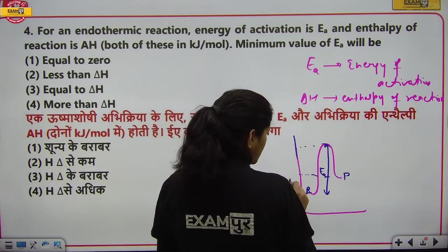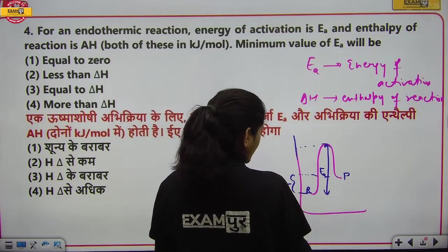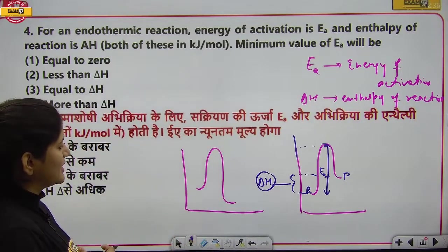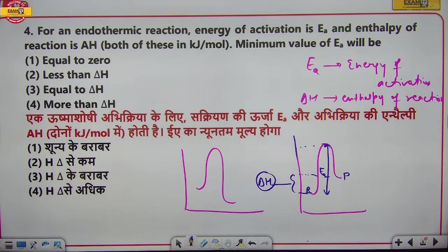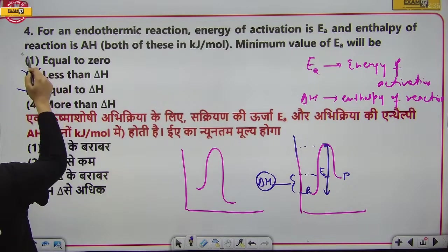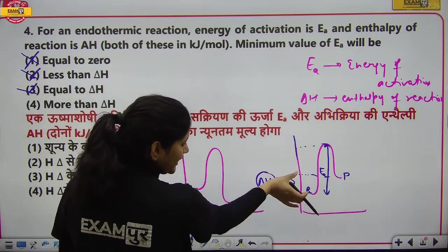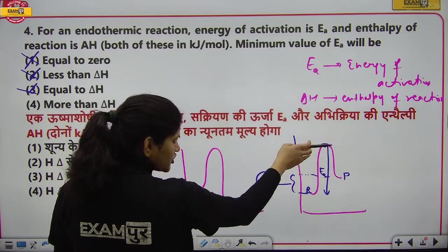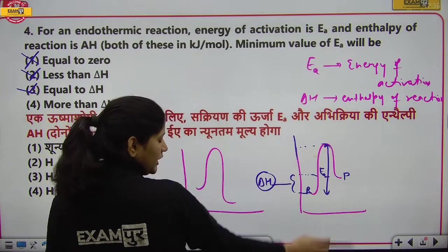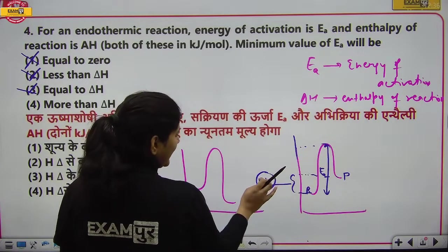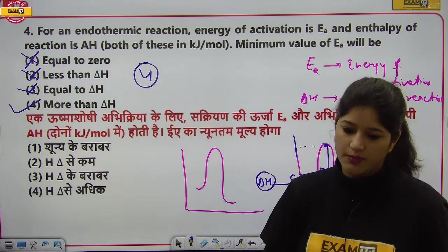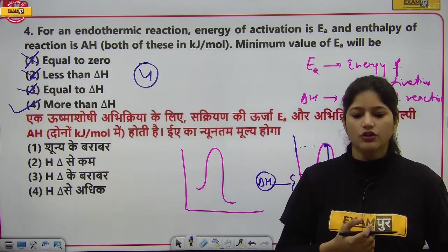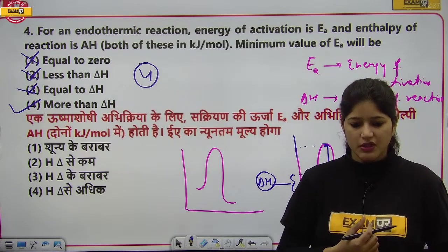यह difference delta H है। Activation energy delta H से ज्यादा होती है endothermic reaction में। इसलिए fourth option सही है जिसमें Ea > ΔH का relation है।